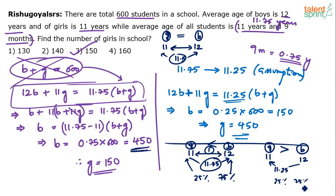Which group is 75%? The girls, because then the average will fall towards girls. So 75% is for girls and 25% is for boys. If you build this understanding, you can solve this without putting pen on paper.